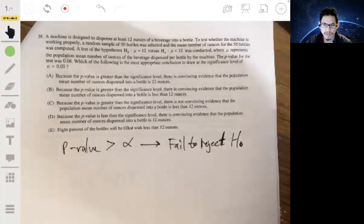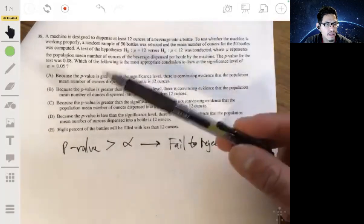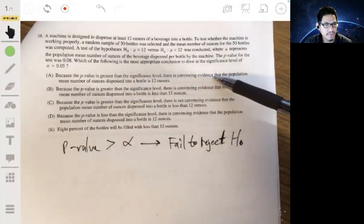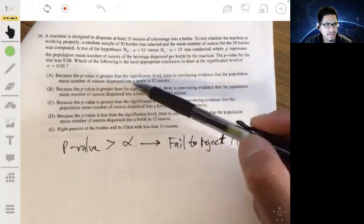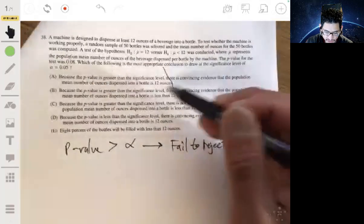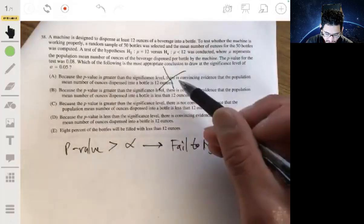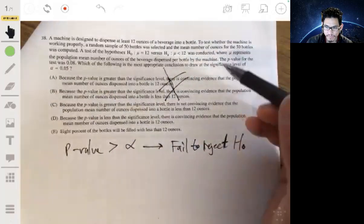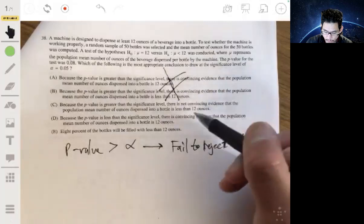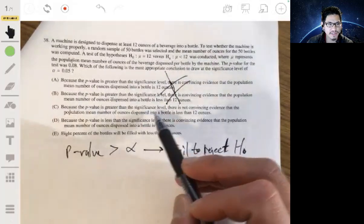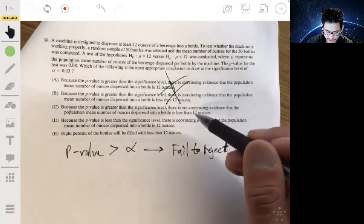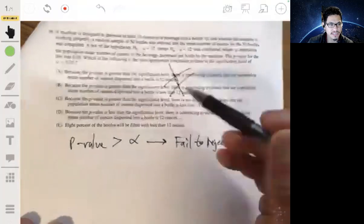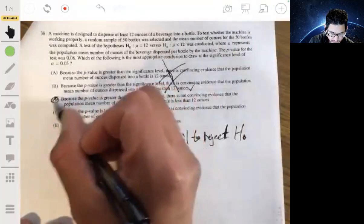Let's see which one of these would say that. So because the P value is greater than the significance level, there is convincing evidence that the population, mean number of answers. No, so there is not convincing evidence. You want one that says there's not convincing evidence. So not A or B. I think it's going to be C. Because the P value is greater than the significance level, there is not convincing, there you go, there is not convincing evidence that the population mean number of answers dispensed. So the bottle is less than 12 answers. So the answer would be C.